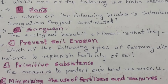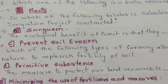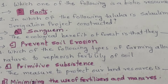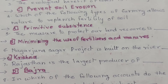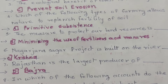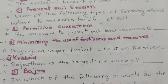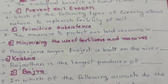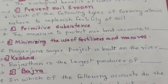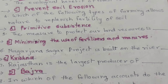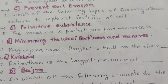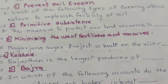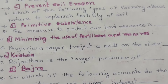Question 3: The ecological benefit of forests is that they prevent soil erosion, so option C is correct. Question 4: Which of the following type of farming allows nature to replenish the fertility of the soil? Option A — primitive subsistence farming — is the correct option.